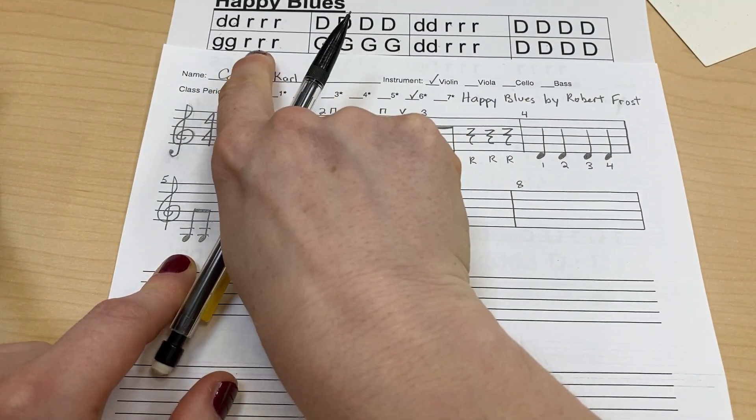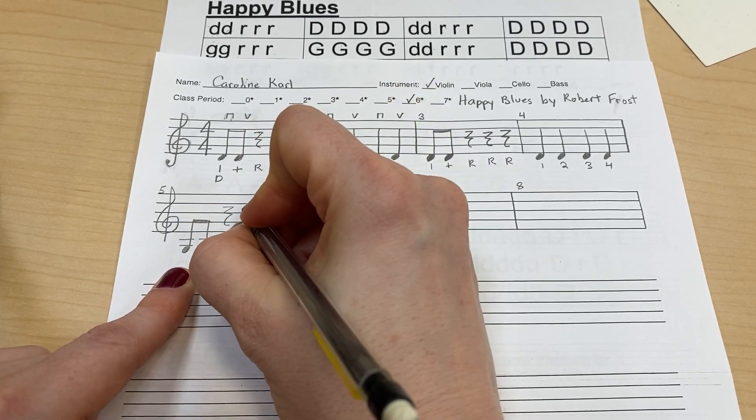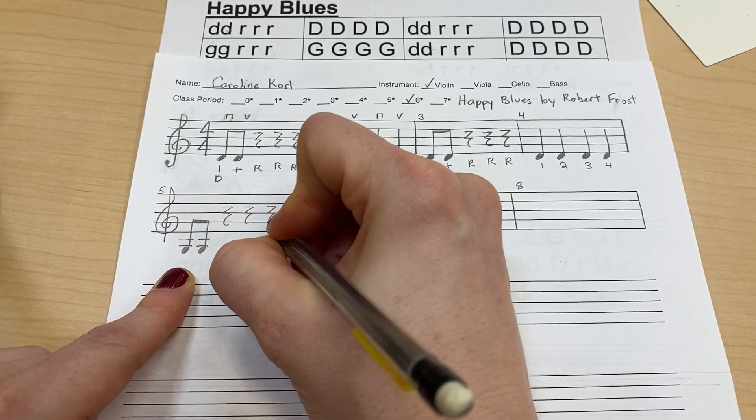And then I need to put my rest, rest, rest. So I'm going to draw my quarter rest, a Z, and then a C, a Z, and then a C, and a Z, and then a C.